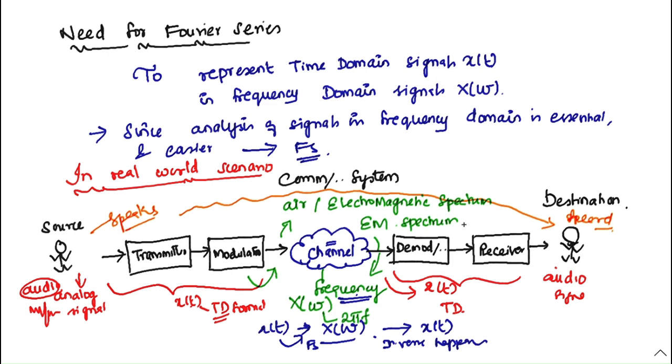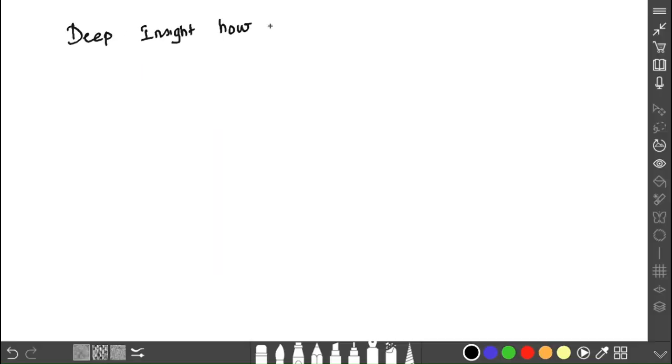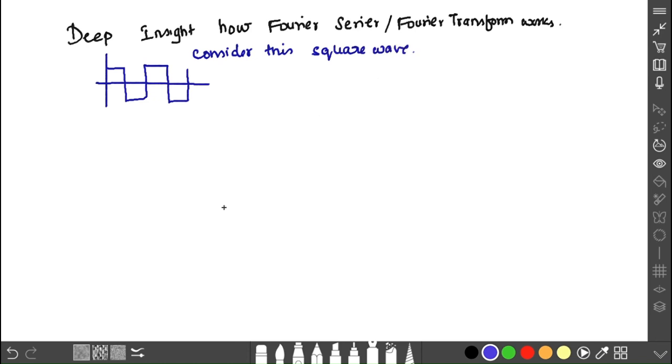This is the need for Fourier series. We will get a deep insight into Fourier series or Fourier transformation with respect to a waveform. Consider this square wave example.